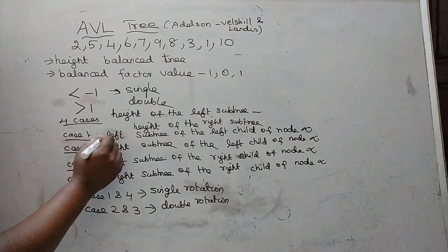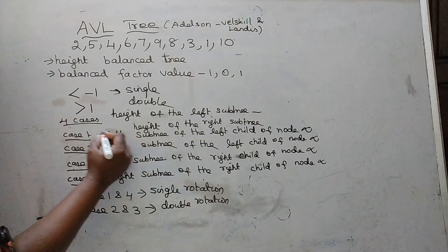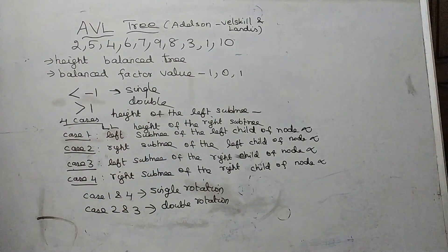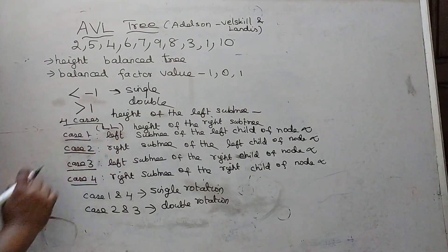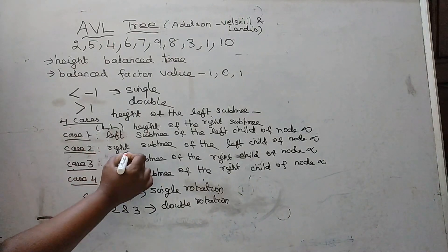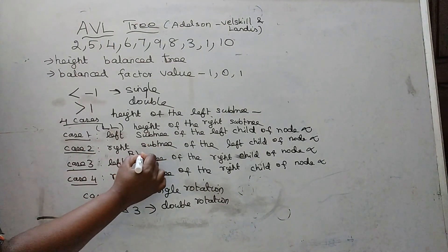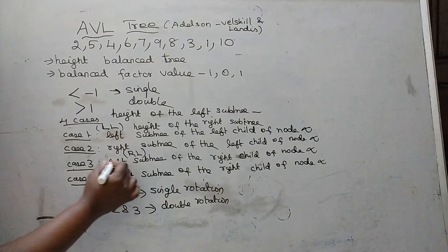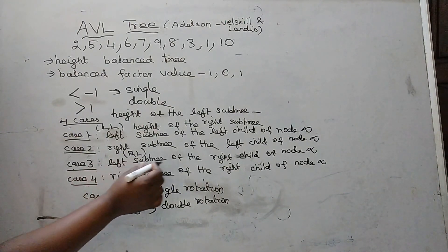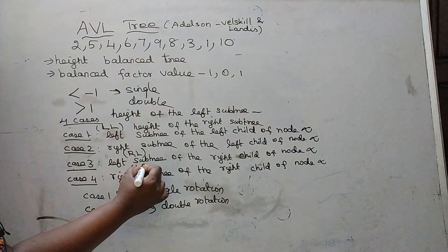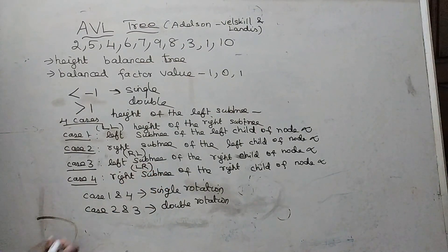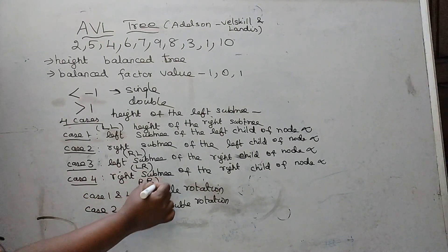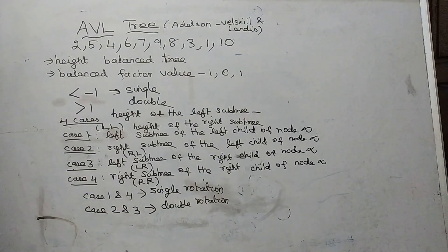Case 1 is an insertion into the left subtree of the left child, so this rotation is called LL rotation. Case 2 is an insertion into the right subtree of the left child of node alpha, so this rotation is called LR rotation. Case 4 is an insertion into the right subtree of the right child of node alpha, so this rotation is called RR rotation.